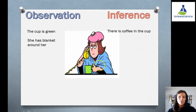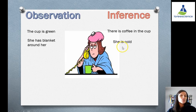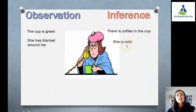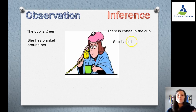She has a blanket around her — that's an observation. We can see that; we know that is true for sure. She's cold — that's an inference. Because we see that she has a blanket, we infer or assume that she is cold, because people usually put a blanket around them when they're cold. That's not an observation, that's an inference. We don't know that for sure.